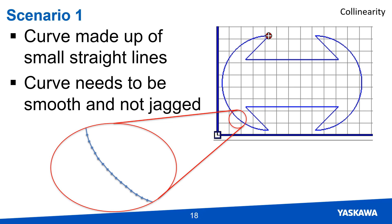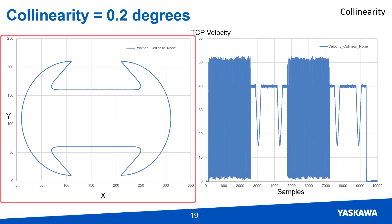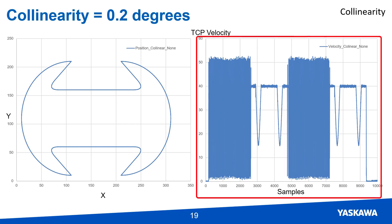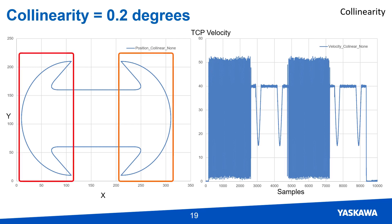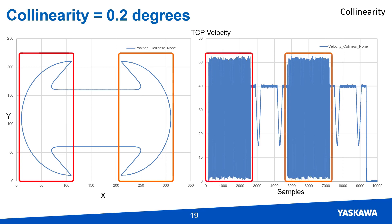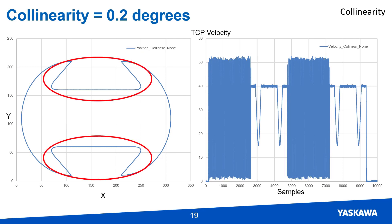Consider the following scenario: a part has two half circles made up of many small straight lines. If the collinearity setting is set too low, the mechanism will not blend between the multiple straight lines. With the collinearity value set to 0.2 degrees, all segments are seen as non-collinear, so a transition is used between all segments. The velocity is constantly adjusting to connect between each point, causing the motion to appear jagged. When moving between the six larger straight line segments, the transition mode is applied so the corners are rounded and the velocity looks smooth.